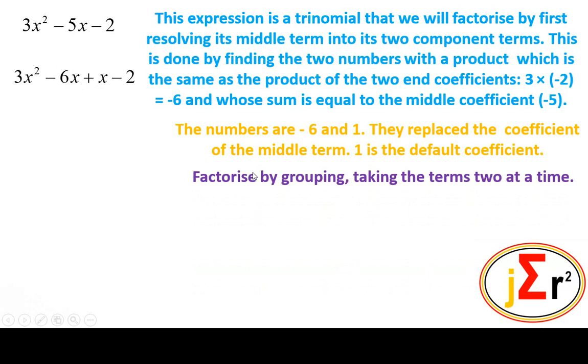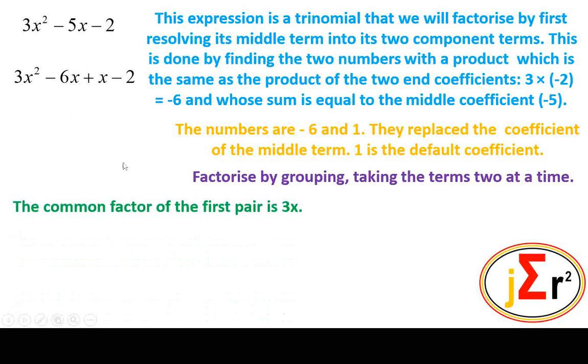We will go straight ahead and factorize by grouping, taking the terms two at a time. We have four terms, factorization by grouping. We are going to group the terms two at a time, but we are not going to show that grouping, that is going to be assumed. We will therefore factorize the first two terms that we have right here. The common factor of the first pair is three x. We can see that three is a common factor of three and six. Also, x is a common factor of x squared and x. The common factor of three x squared and negative six x is three x.